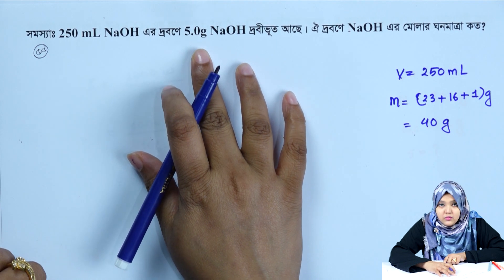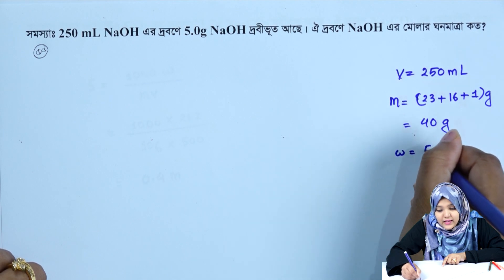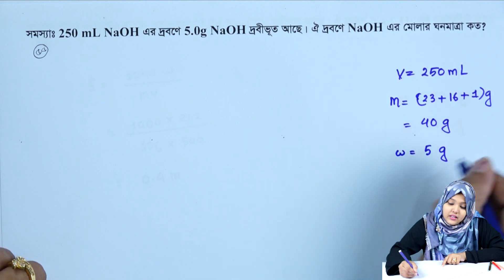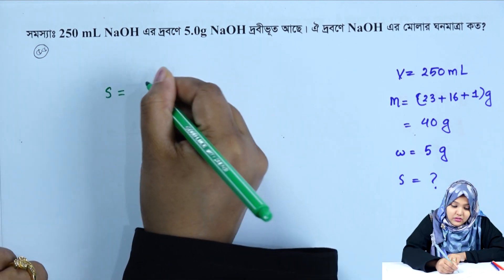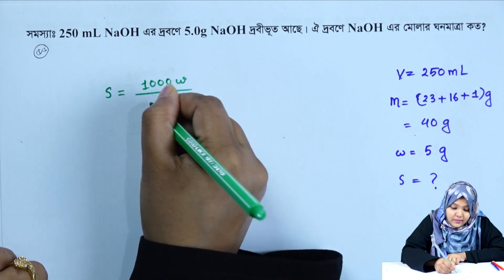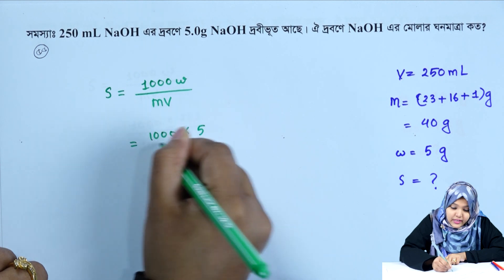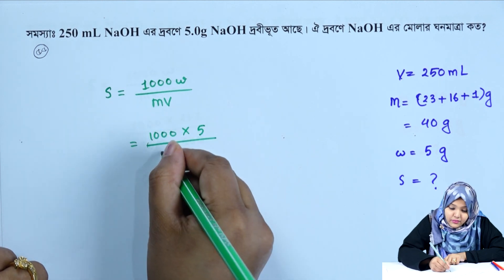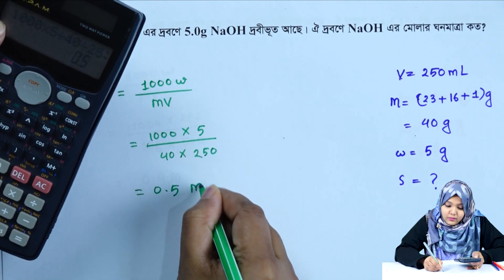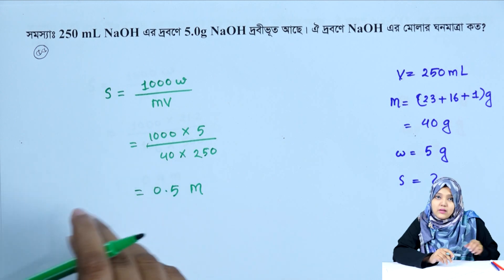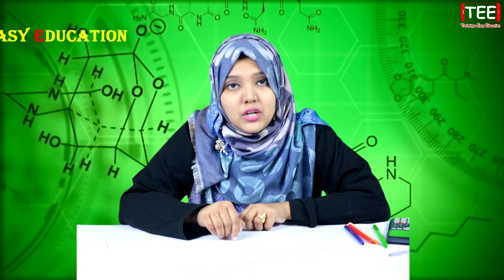Now for sodium hydroxide, w is equal to 5 g. S is equal to 1. So using the formula: molarity is equal to 1000 w divided by m times v. 1000 w is equal to 5, m is equal to 40, v is equal to 250. So sodium hydroxide molarity is equal to 0.5 molar.